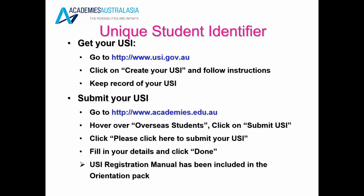Then, go to the Academies Australasia website www.academies.edu.au and hover over the Overseas Students section. You will see a drop-down — click on 'Submit USI' and then click 'please click here to submit your USI'. Fill in your details and click done. The USI registration manual has been included in the orientation pack, so once you are going through these steps, you can refer back to that manual.